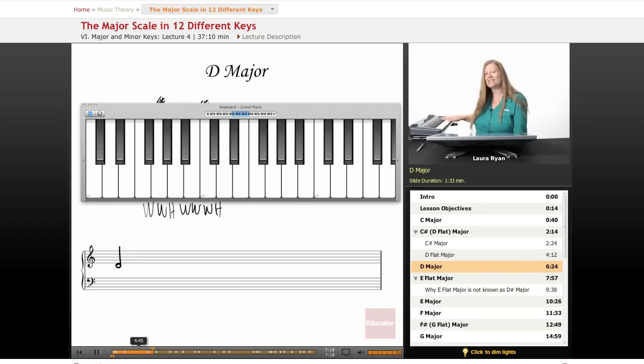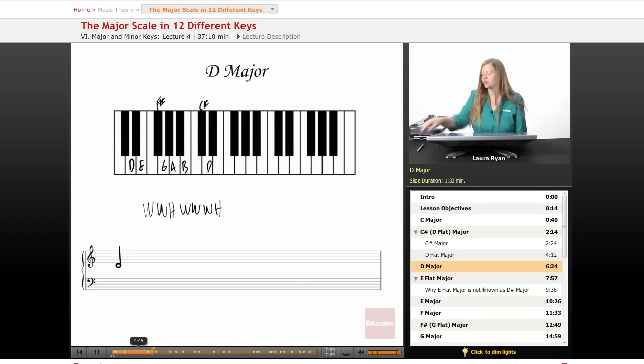Only two black keys, a little easier. Whole, whole, half, whole, whole, whole, half. That's what it sounds like. Let's continue writing it out. D, E, F sharp, G, A, B, C sharp, and D. There it is. You can write it going up and down, but for time's sake we'll just write the ascending scale going up.